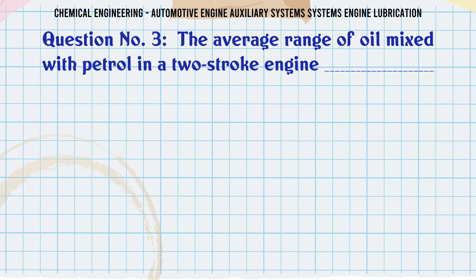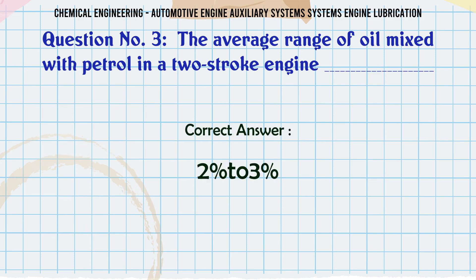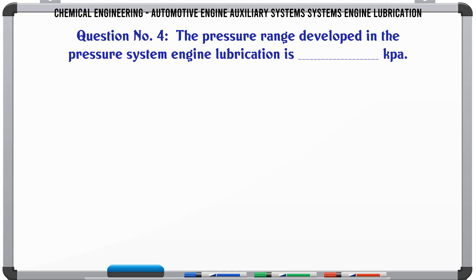The average range of oil mixed with petrol in a two-stroke engine: a) 2 to 3, b) 4 to 6, c) 3 to 7, d) 2 to 8. The correct answer is 2 to 3.